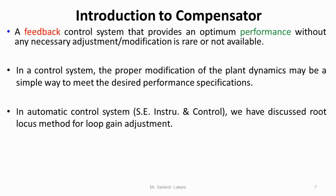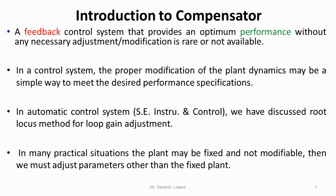In automatic control systems, we have discussed about the root locus method in which we discussed the effect of open loop gain change on the closed loop stability of the system. If we adjust the root locus of the given system, we can have the adjusted or desired response from the control system. In many practical situations the plant G(s) is fixed and it is not modifiable, so we have to do adjustments other than the fixed plant, or we have to adjust the closed loop system in such a way that the desired performance is obtained.